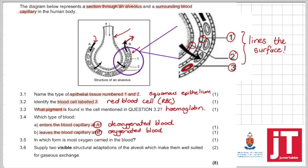3.5, in which form is most oxygen carried in the blood and that would be as oxyhemoglobin because oxygen and hemoglobin for each other they have quite a high affinity so oxygen is attached to hemoglobin quite easily and is transported in the blood combined to hemoglobin.